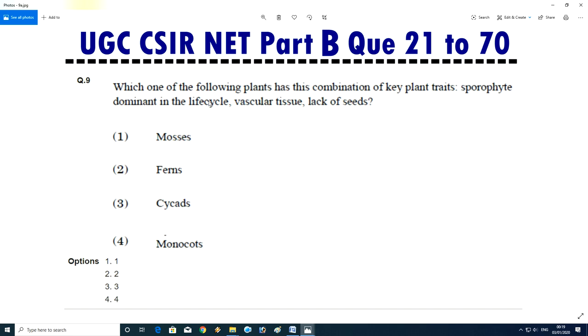Question No.9 - Which of the following plant has this combination of key plant traits: sporophyte dominant in the life cycle, vascular tissue and lack of seeds? Mosses, ferns, cycads, or monocots? Answer will be B, ferns.